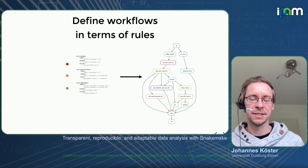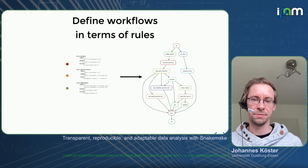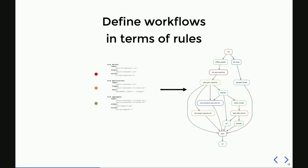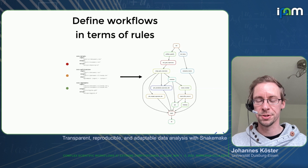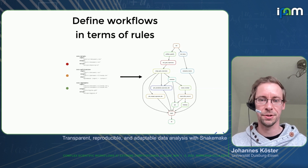SnakeMake takes these rules and combines them automatically by matching input files against output files, obtaining a directed acyclic graph (DAG) of jobs. This is the execution plan. Any parts that are independent of each other can be executed in parallel. SnakeMake can be configured to make use of whatever resources you have available — a single machine, a cluster, the cloud, or whatever.